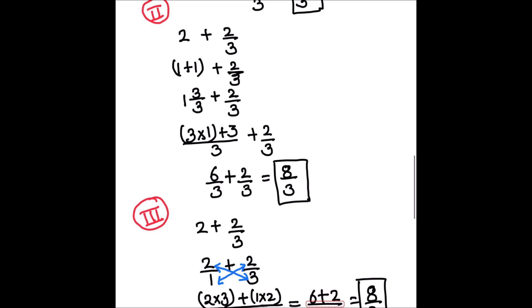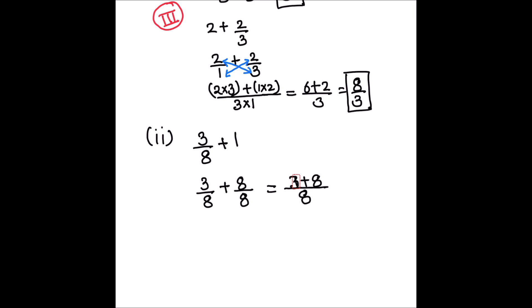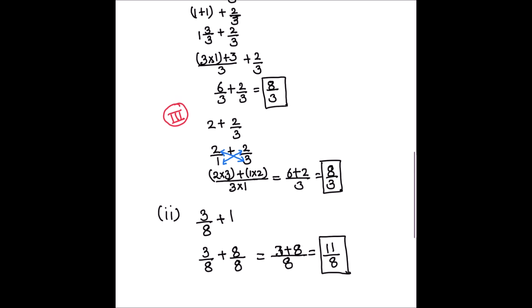So these are the three methods by which we can add a fraction and a whole number. Let's solve the second question, which is 3 eighths plus 1. We are going to use the second method. 3 eighths is 3 upon 8, and 1 can be written as 8 upon 8, because we want the denominator to be 8. Since the denominators of both fractions are the same, we can add them easily. The denominator will be 8 and the numerator will be 3 plus 8, which equals 11 upon 8 — our final answer.